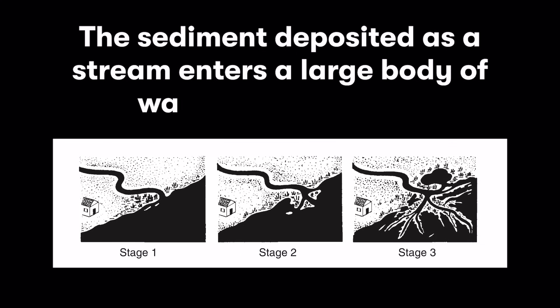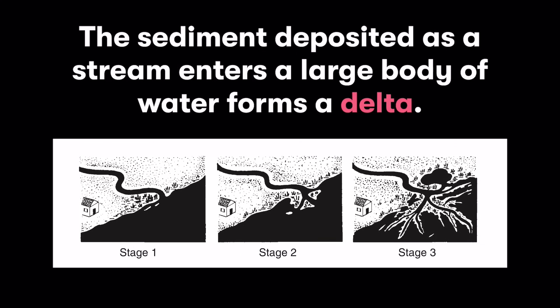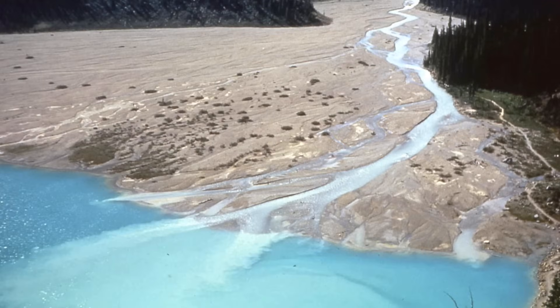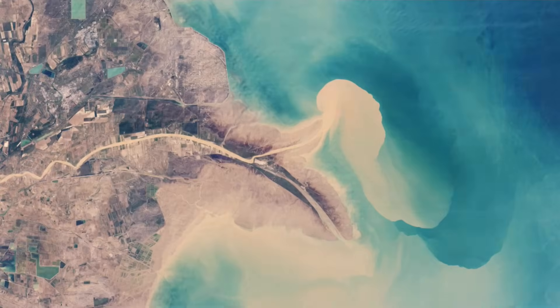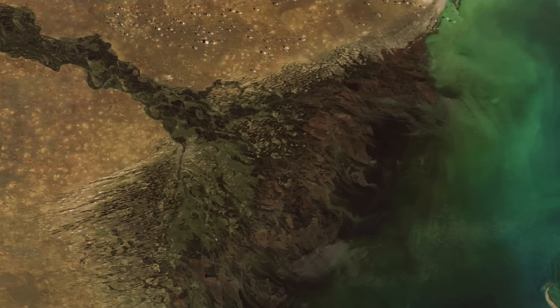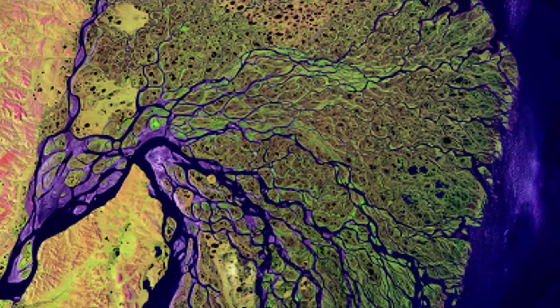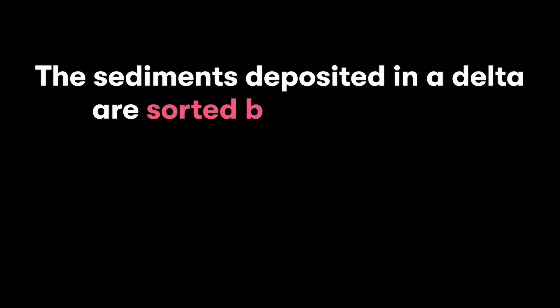The sediment deposited creates an accumulation of sand, silt, and clay called a delta. In some cases, that delta can become a new landmass. Here's an example of a delta where grayish, muddy sediment has been deposited as a stream enters a larger body of water. These deltas can be massive — visible from space. This is the Amazon River Delta: huge amounts of sediment deposited over time.